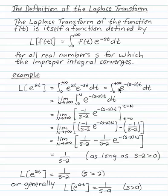It still says e to the 2t times e to the minus st. And then remember that the improper integral is the limit as n goes to infinity of the definite integral 0 to n, e to the minus quantity s minus 2t dt.